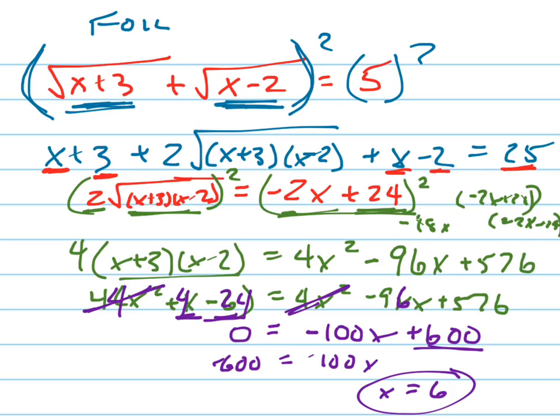And let's check it: 6, 6, hey that's nice! 6+3 is 9, square root of 9 is 3, square root of 4 is 2, 3+2 is 5 and it checked out. x equals 6 is the answer.